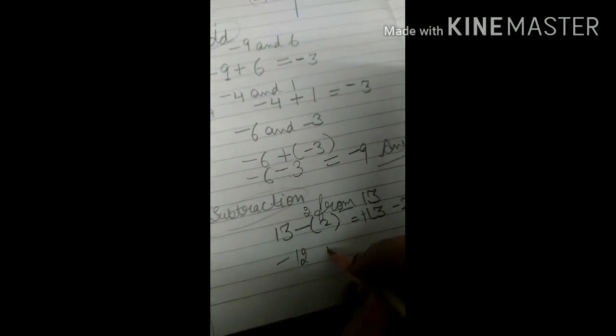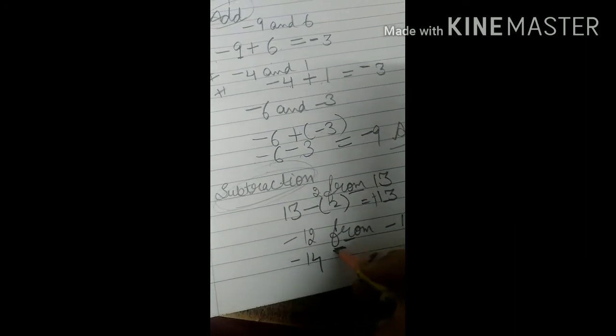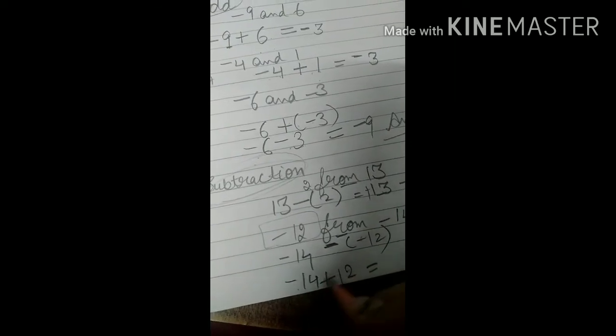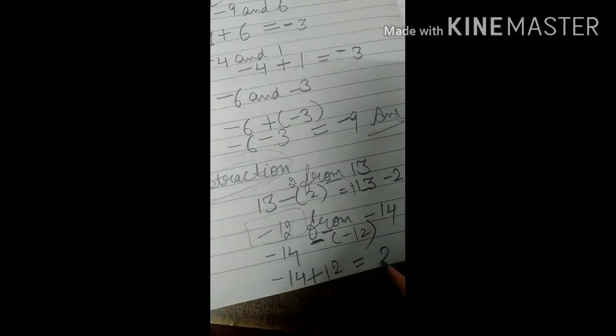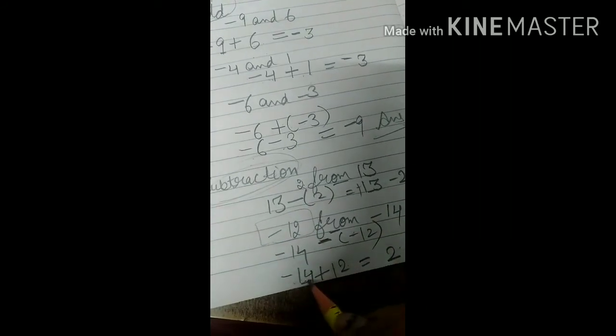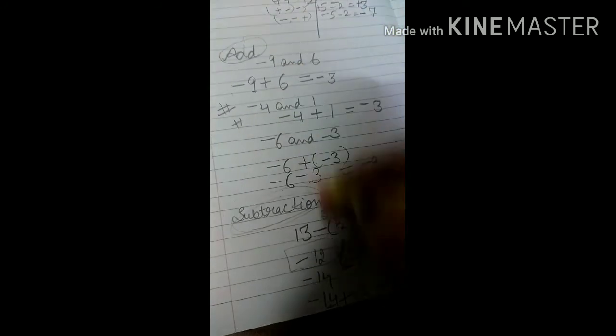One more: subtract minus 12 from minus 40. We write minus 40, and subtraction of minus 12 means minus minus 12. Minus minus gives plus, so we get minus 40 plus 12. Plus minus gives minus, so the sign comes from the bigger number, which is 40 — in front of 40 there is minus — so the required answer is minus 28.